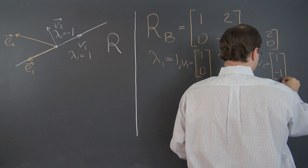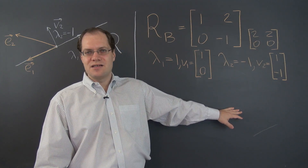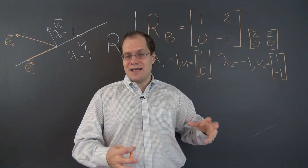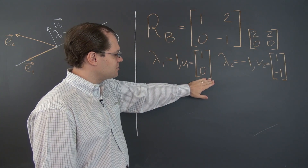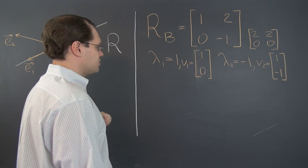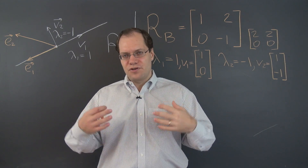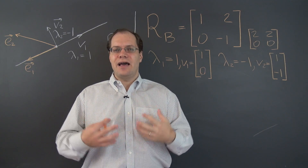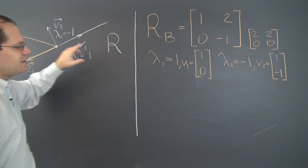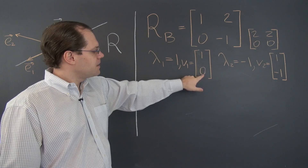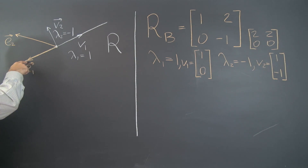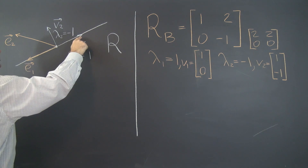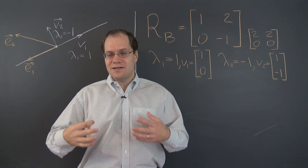We're done with the component space portion of our analysis. We have our almost-answers — these are the components of the answers we're looking for. Now let's translate these components into actual eigenvectors of the reflection transformation. The first one, (1, 0), means we take 1 of E1 and 0 of E2, which gives us E1 itself — entirely consistent with V1.